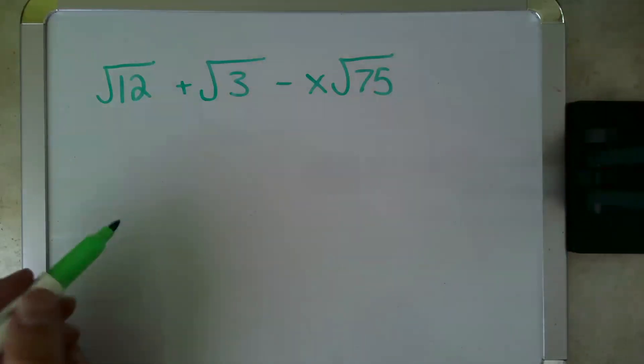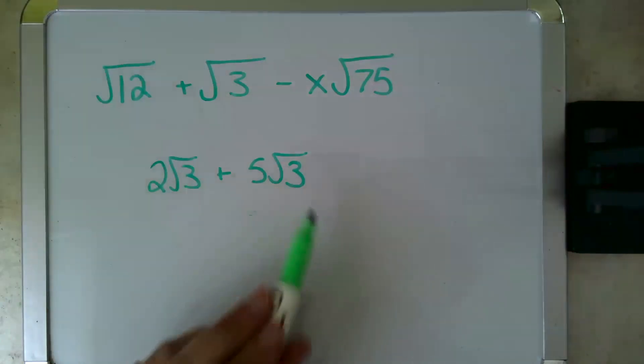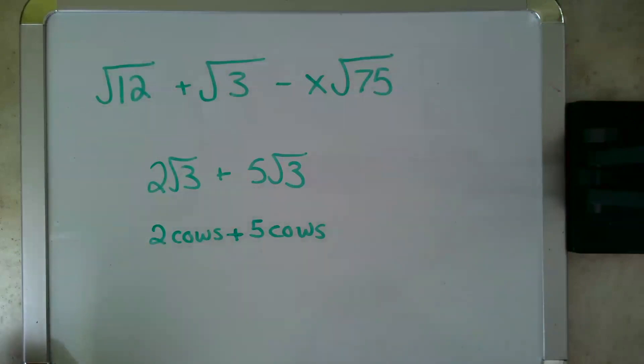So let's say the problem instead had said something like this, 2 root 3 plus 5 root 3. Well, I like to apply something I call cow math, and that's like this, 2 cows plus 5 cows.